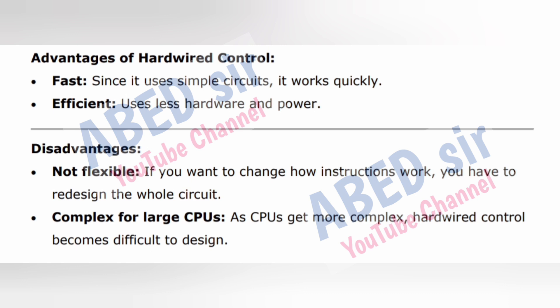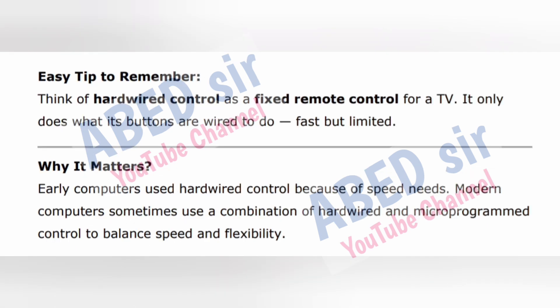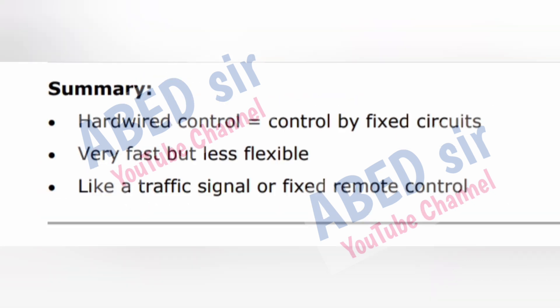Advantages of hardwired control: Fast — since it uses simple circuits, it works quickly. Efficient — uses less hardware and power. Disadvantages: Not flexible — if you want to change how instructions work, you have to redesign the whole circuit. Complex for large CPUs — as CPUs get more complex, hardwired control becomes difficult to design. Easy tip: Think of hardwired control as a fixed remote control for a TV — it only does what its buttons are wired to do, fast but limited. Why it matters: Early computers used hardwired control because of speed needs. Modern computers sometimes use a combination of hardwired and microprogrammed control to balance speed and flexibility. Summary: Hardwired control = control by fixed circuits. Very fast but less flexible.